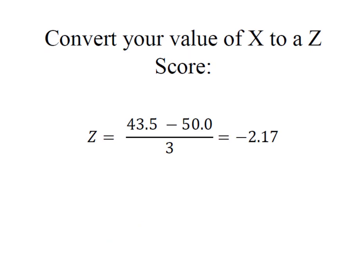Once again I'm going to convert my value of x to a z-score by simply taking x minus the mean, dividing it by the standard deviation, which in this case is going to give me a negative z-score of -2.17. We already expected to see a negative z-score because 43.5 falls below the mean on the curve.